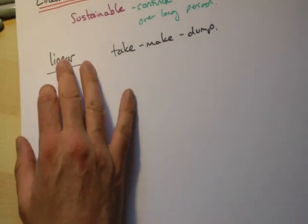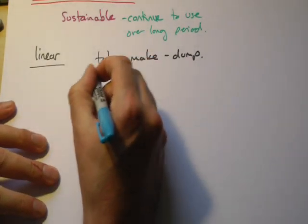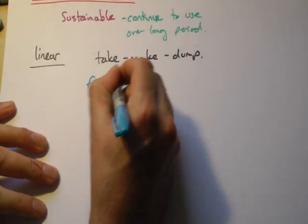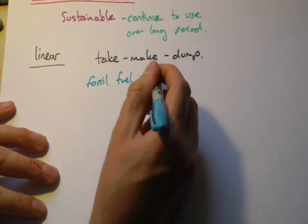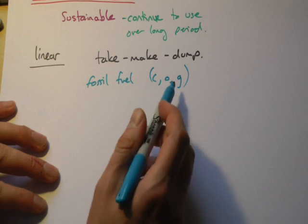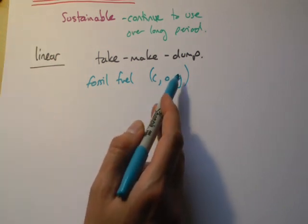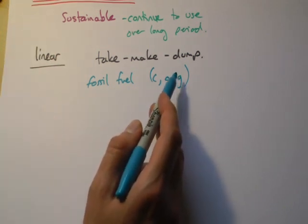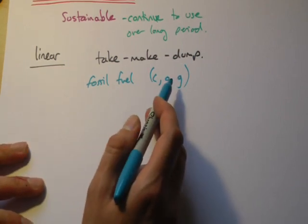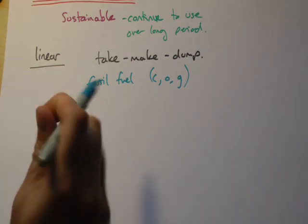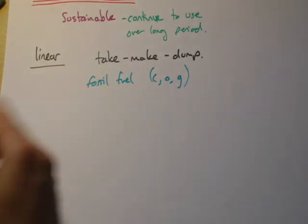We need to be concerned about some of the things we're using up. This includes fossil fuels — coal, oil, gas. On a very long time scale we might get coal, oil, and gas reforming, but you're looking at tens of hundreds of millions of years. That's certainly not on a human lifespan. So we really need to cut down how much we use fossil fuels because we will run out.